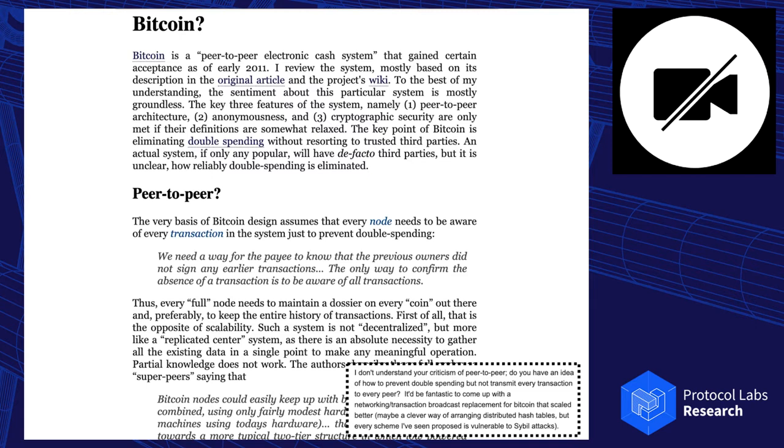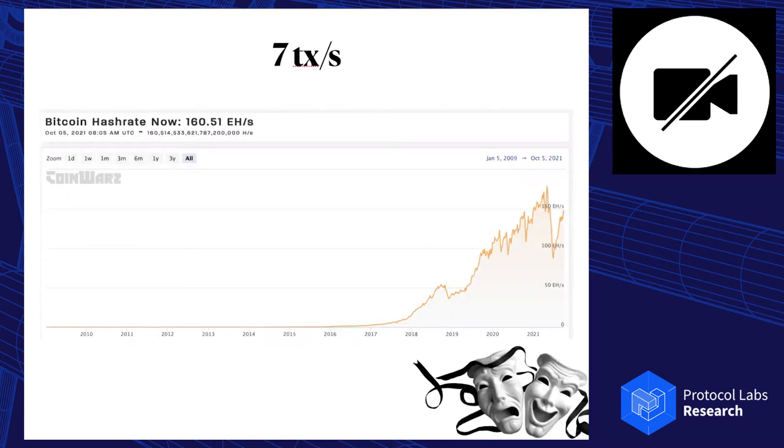So that kept bothering me for about 10 years. So now I have a lot of ideas. On this graph, we may see the scale of the catastrophe. More or less the last 10 years, the hash rate. So we all know that Bitcoin is consuming electricity like a country. But the discussion is like which country: Denmark, Netherlands, Poland, Argentina, there are many opinions. Nobody knows for sure, but it consumes a lot.